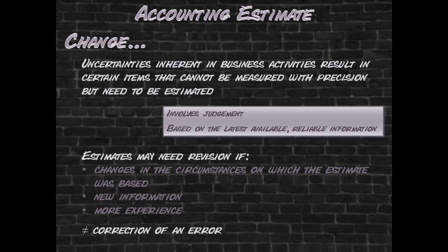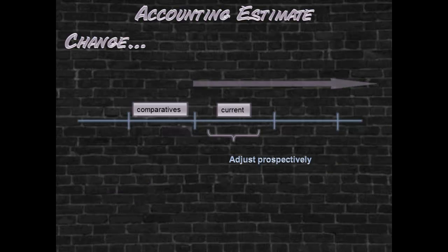Accounting estimates are an integral part of the accounting process. The nature of such estimates is that they can change. This change is not regarded as the correction of a prior period error. Accounting estimates are adjusted in the current period and future periods. Comparative information is not restated.